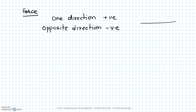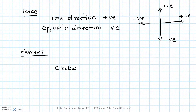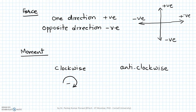For example, in the horizontal direction, if we take rightward-pointing forces to be positive then leftward-pointing forces are negative. Similarly, if upward-pointing forces are positive then downward-pointing forces are negative. For moments, we use a clockwise or anti-clockwise sign convention: clockwise sense of moment is positive and anti-clockwise sense is negative.